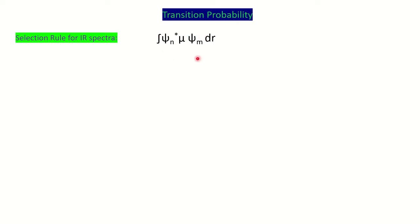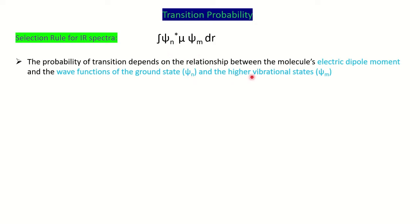First we will see transition probability. Since we are talking about vibrations, we will be seeing the IR spectra. IR is infrared radiation, and we find the vibrational transition here. Which transitions will be allowed and which will be forbidden — we have certain selection rules for that. This is called the transition probability. The formula is the integral ψ_n · μ · ψ_m, where μ is the dipole moment and ψ_n and ψ_m are the wave functions in the ground state and higher vibrational state.